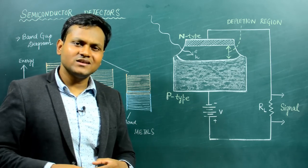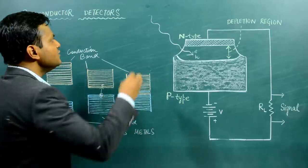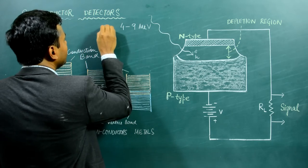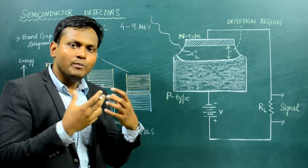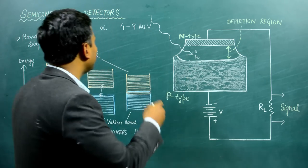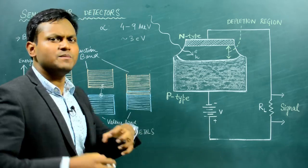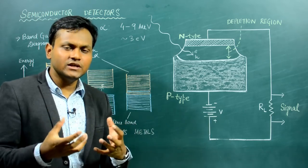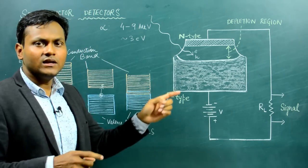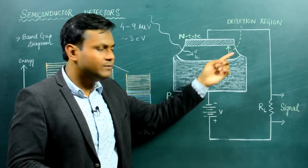An alpha particle can create an enormous number of electron-hole pairs inside the depletion layer. Alpha particles can have energies ranging from around 4 to 9 mega electron volts (MeV). However, the amount of energy necessary to create one electron-hole pair in a semiconductor detector is only around 3 electron volts (eV). So as you can see, the alpha particle has almost a million times greater energy than is necessary to create an electron-hole pair, meaning one alpha particle through large numbers of collisions can lead to the creation of millions of electrons and holes in the depletion layer.